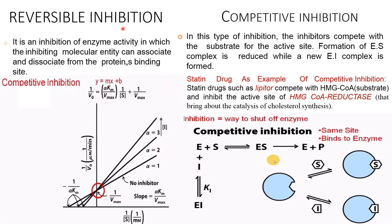Reversible inhibition is an inhibition of enzyme activity in which the inhibiting molecule entity can associate and dissociate from the protein's binding site.